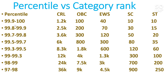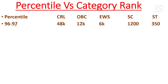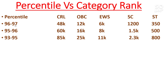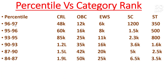For 96 to 97 percentile, your CRL will be 48,000. For 95 to 96, CRL will be 60,000. For 93 to 95, CRL will be under 85,000. For 90 to 93, CRL will be under 1.2 lakh. For 87 to 89 percentile, CRL will be under 1.5 lakh. For 84 to 87, CRL will be under 1.9 lakh. Other category ranks you can check sideways.